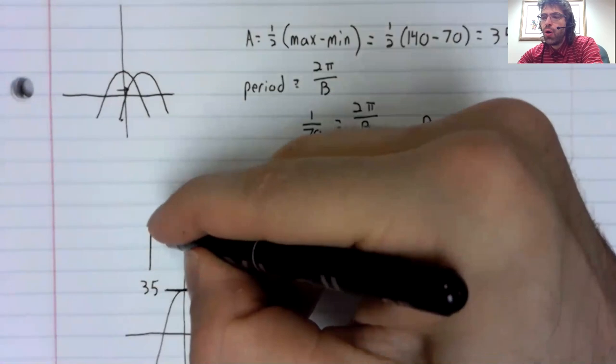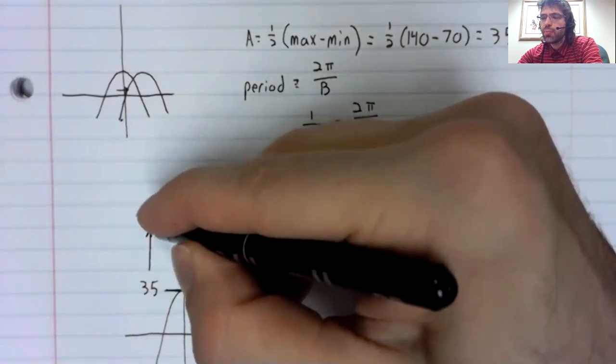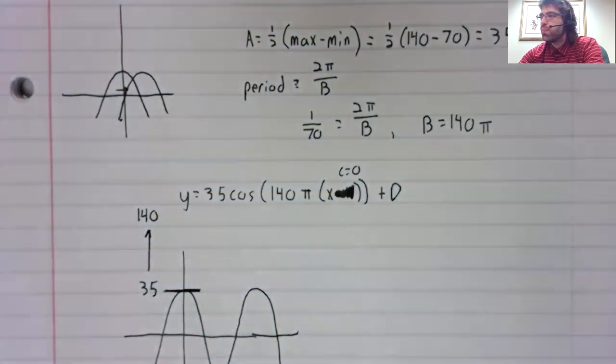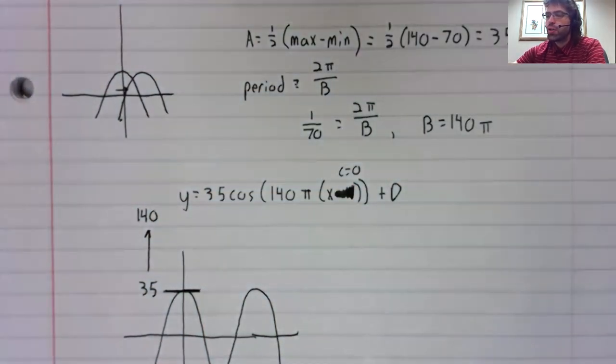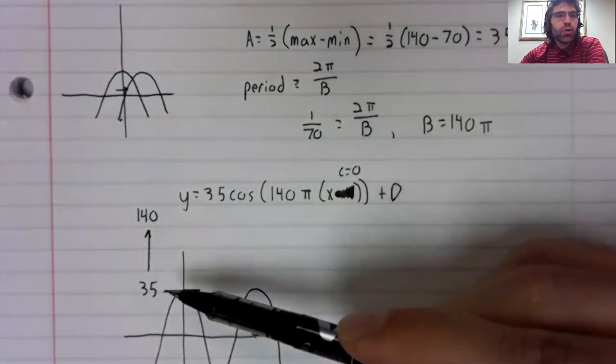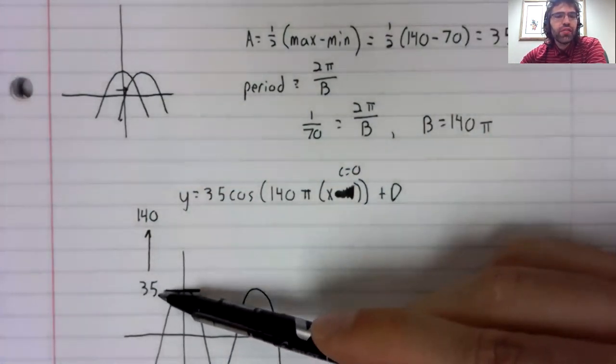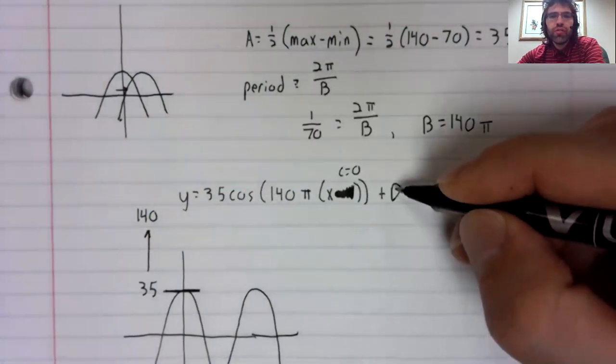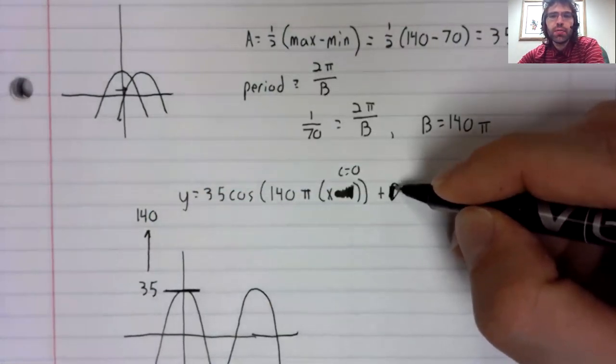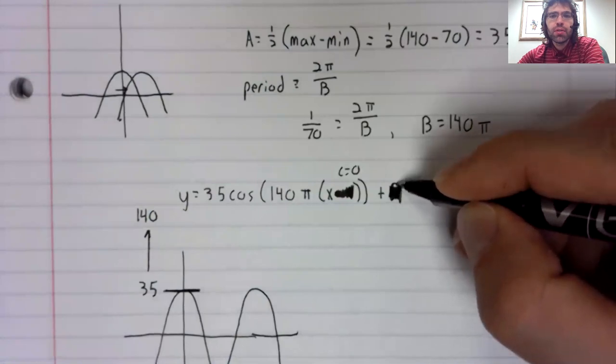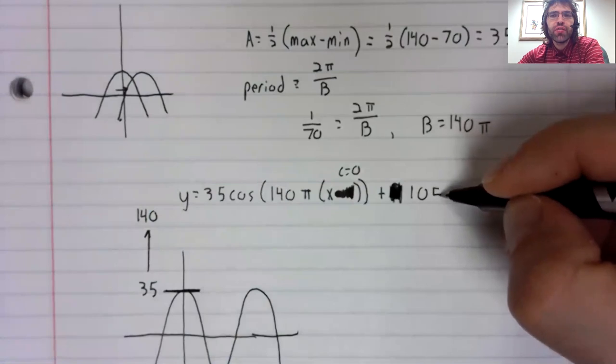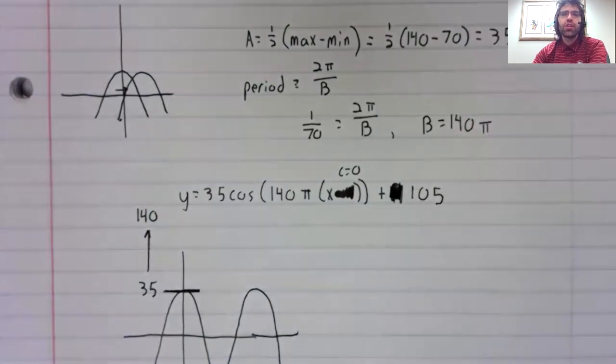We want the maximum value to be 140. So to go from 35 to 140, we must shift up by 105 units.